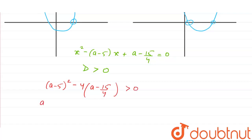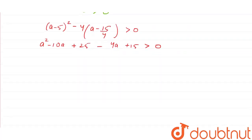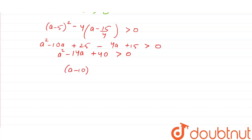D equals B squared minus 4AC, which is (A minus 5) whole squared minus 4 times A times (A minus 15/4), and this must be greater than 0. Solving this, we get A squared minus 14A plus 40 is greater than 0. Our factors will be (A minus 10)(A minus 4) is greater than 0.